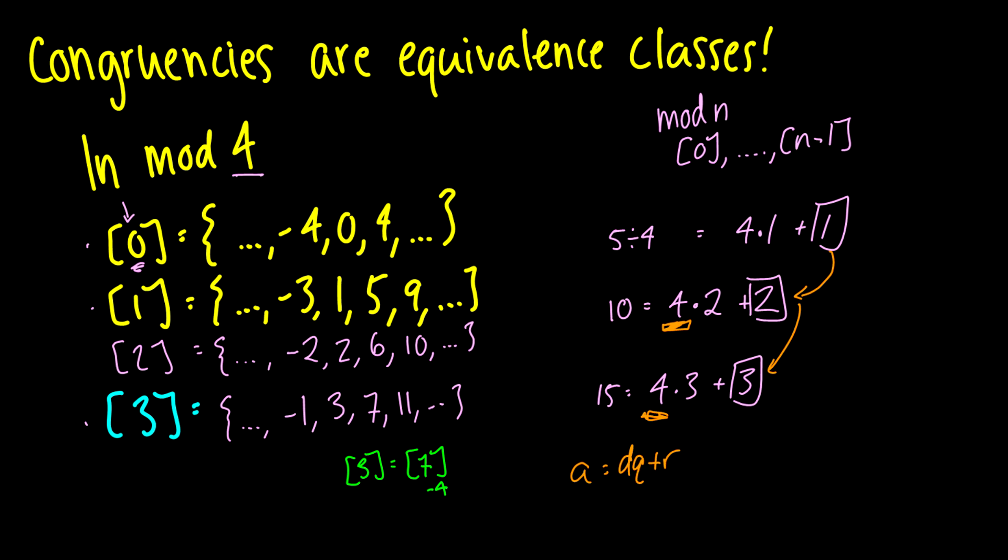This d is really going to be the modulo number that we're working in. So if we have, for instance, mod n, this is going to be a is equal to nq plus r, and of course this r right here, this determines the equivalence class.